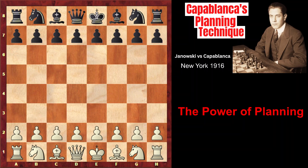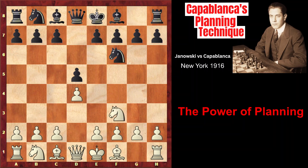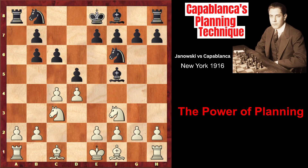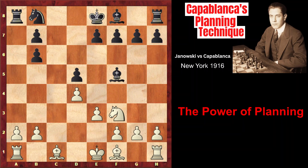Capablanca played black pieces and it was Slav defense: c6, Nc3, Bf5, Qb3 attacking b7, Qb6, the queens are exchanged, the knights are also exchanged, e3, Nc6, Bd2.